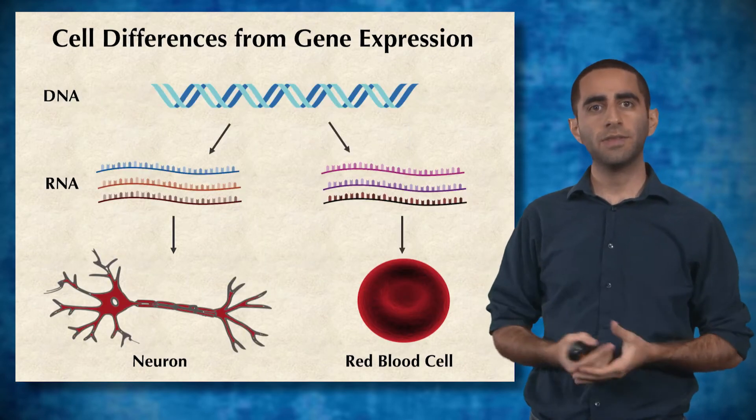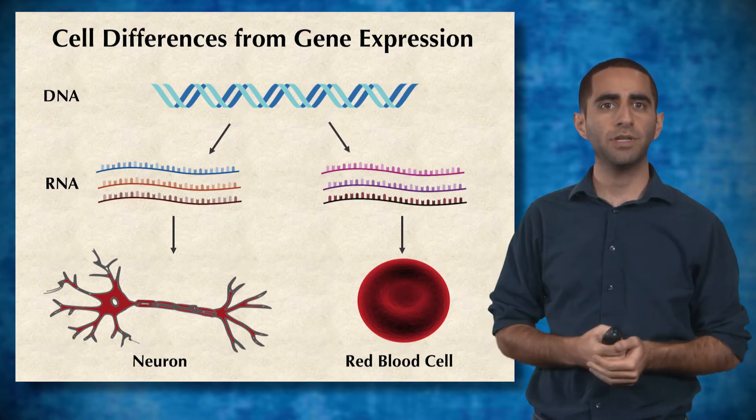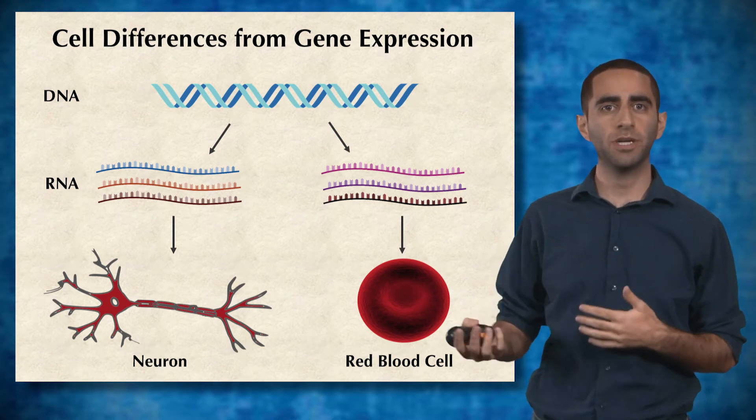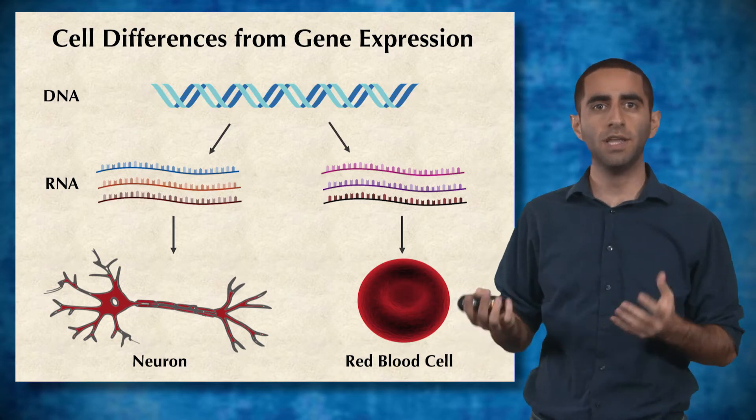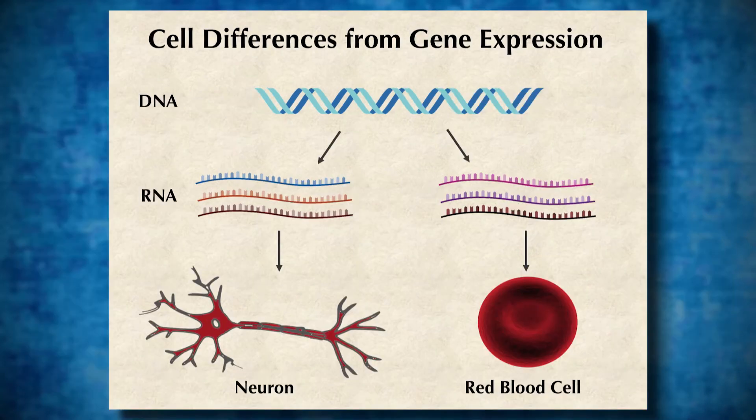It turns out that cell differences are primarily attributed to what genes are being expressed in different cells. So the only difference between a neuron and a red blood cell, even though they have identical genomes, is that different genes are being expressed in each cell.